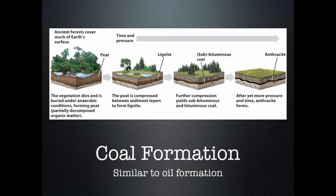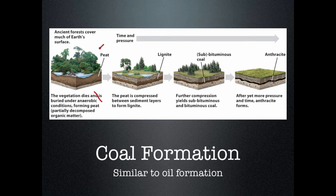The first fossil fuel to know about is coal. Coal formation starts with plants in a tropical swampy area. These plants eventually die, fall into the swamp, and are put into anaerobic conditions — meaning there's no air. They don't decompose well because the organisms that would break them down aren't present in that anaerobic environment. Over time they build up on the bottom of the swamp, and as layer builds upon layer, the pressure pressing down causes this material to form into peat.